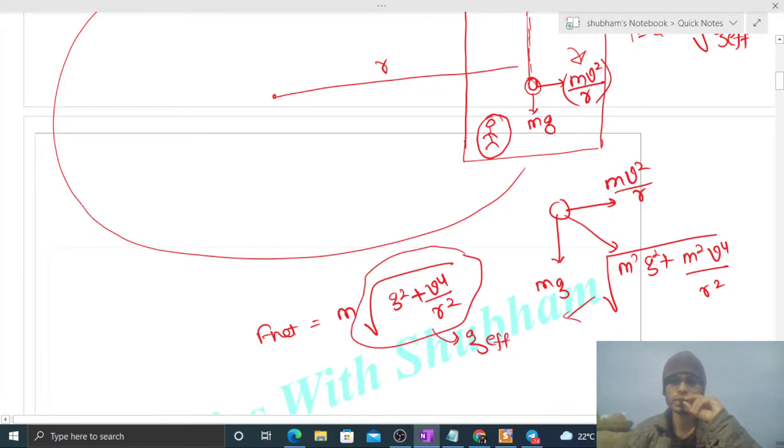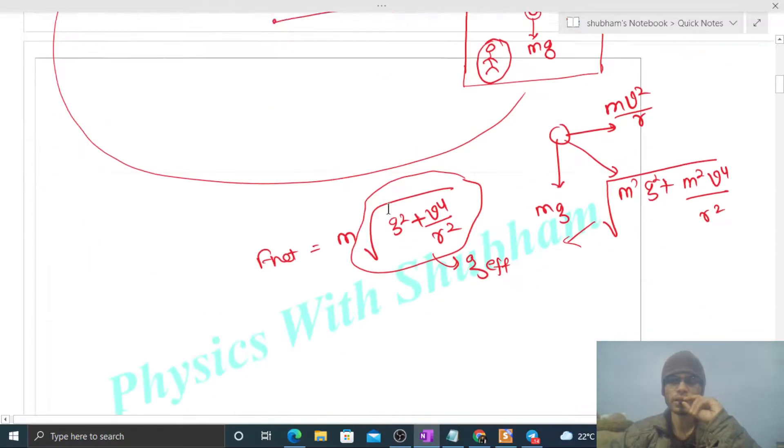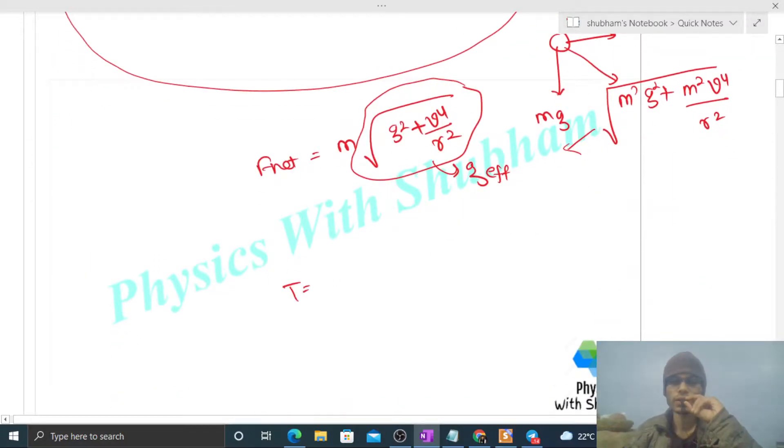Just put the value of this g_effective in the time period formula. So time period will be 2π√[L/(g² + v⁴/r²)^0.5]. Now you know everything: length will be 0.03 meter, g will be 9.8 meter per second square.